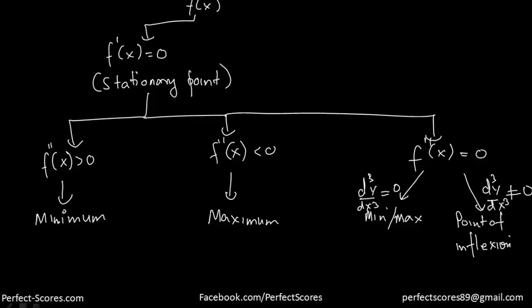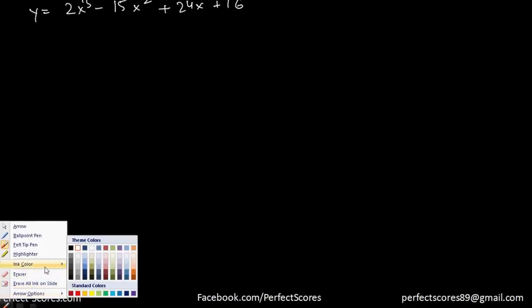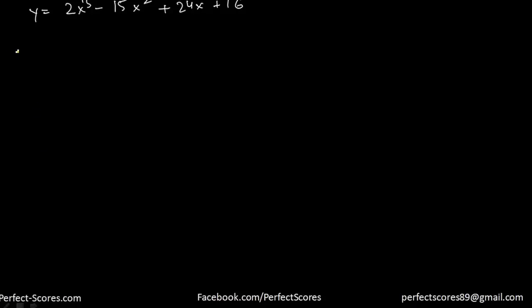Let's work through a function. Let's say y = 2x³ - 15x² + 24x + 16, and we have to find all the stationary points. Step 1 is to find the single derivative dy/dx. So differentiating: dy/dx = 6x² - 30x + 24.